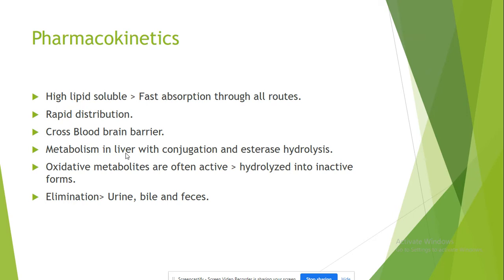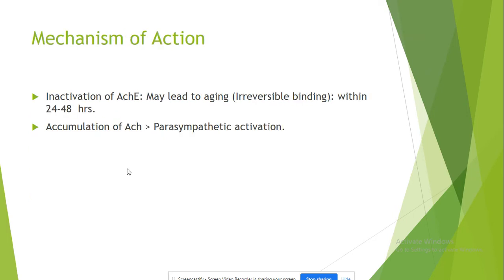They are metabolized in the liver. Their mechanism of action involves inactivation of the enzyme acetylcholinesterase. This is the enzyme responsible for breaking down acetylcholine, which is a neurotransmitter. So if you inactivate this enzyme, the acetylcholine will not be degraded, so it will start to build up — and acetylcholine buildup will lead to parasympathetic activation.